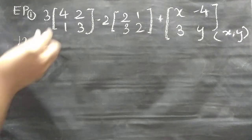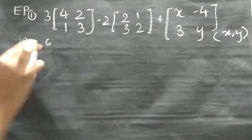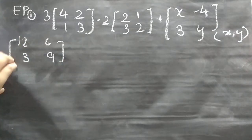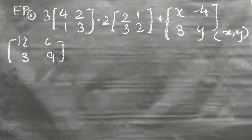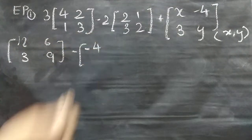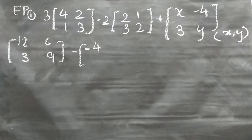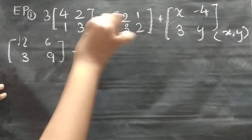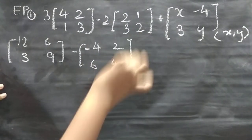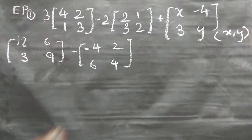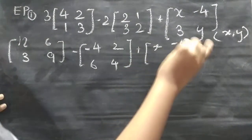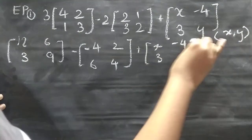So we get 12, 6, 3, 9 for the first matrix. Minus 4, 6, 2, 4 for the second matrix. Then plus, this one as it is — x minus 4, 3, 1.